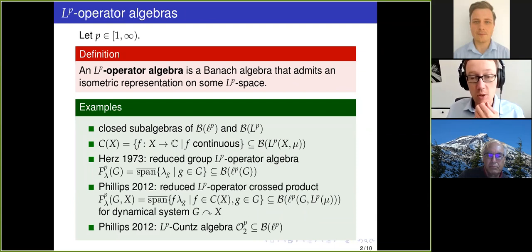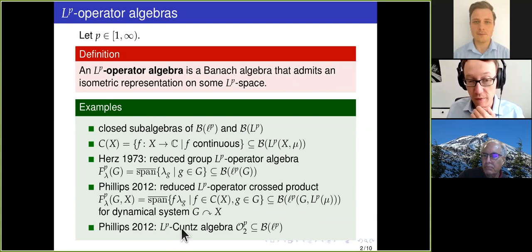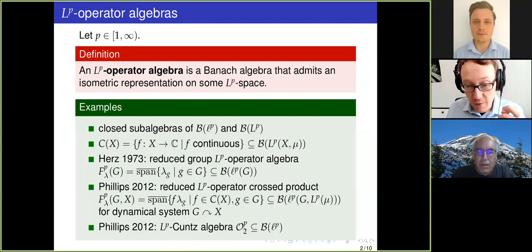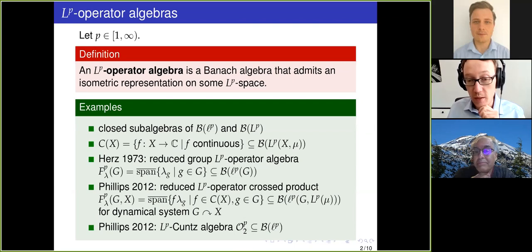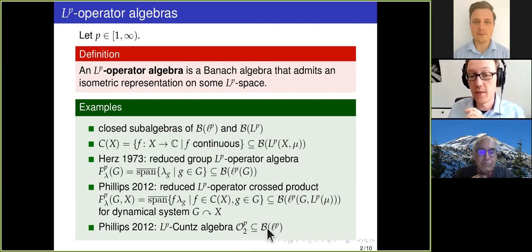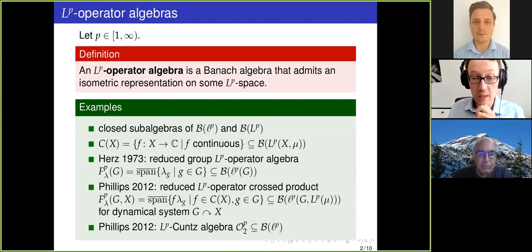I also want to mention the LP Kuntz algebras, which were also introduced by Phillips in 2012. These are very specific and very important Banach algebras, denoted O_2^P, which are Banach algebras of operators on little LP and generalize the famous Kuntz C-star algebras.